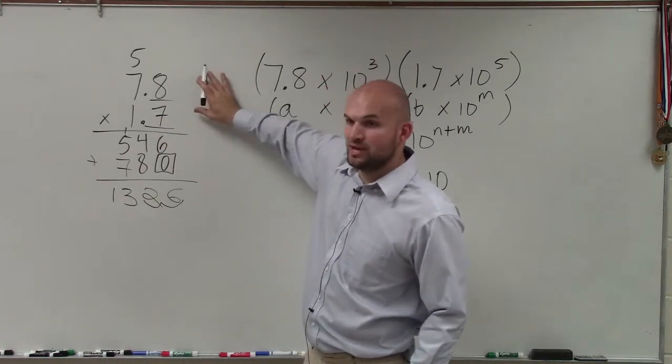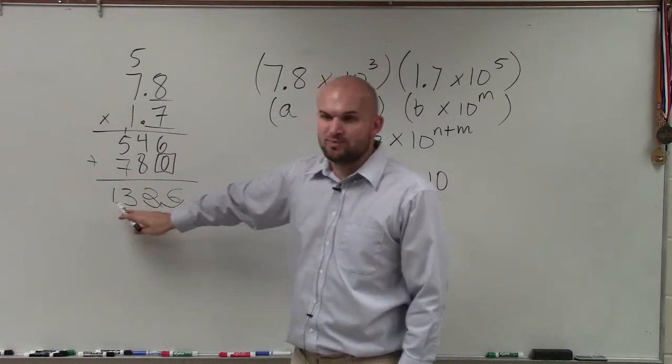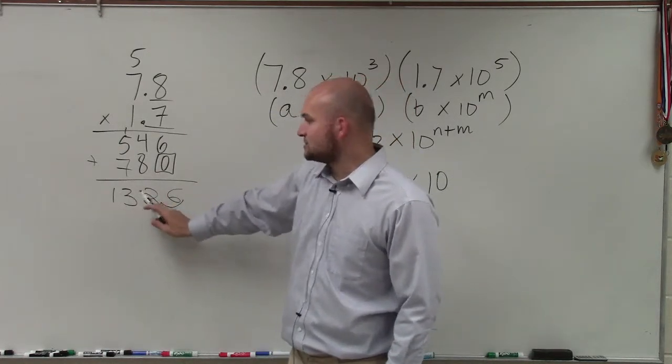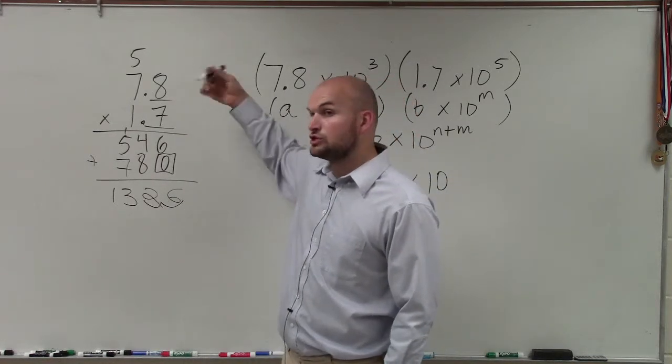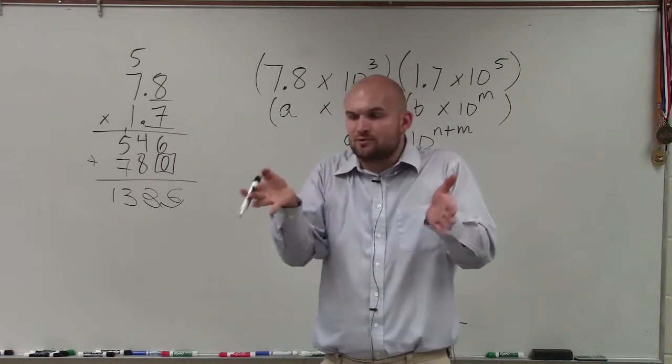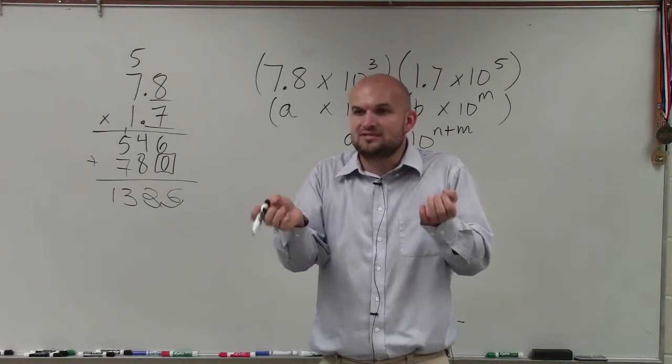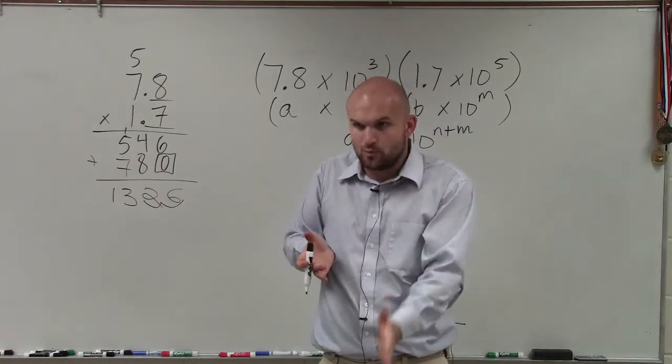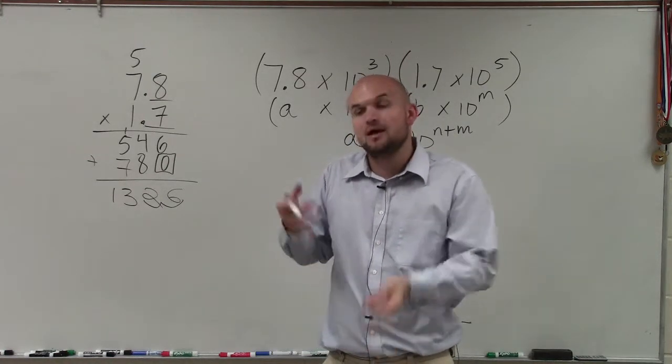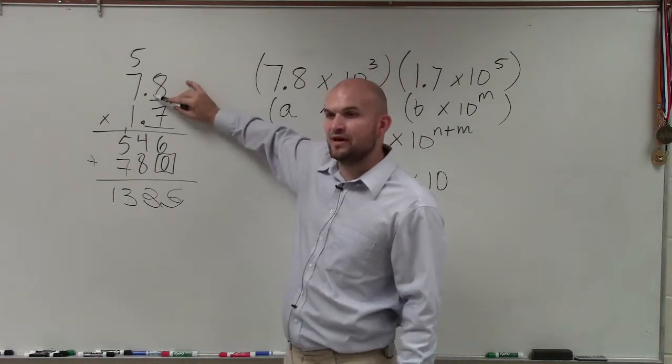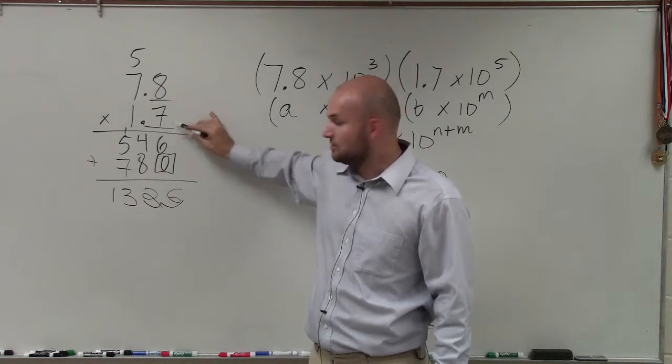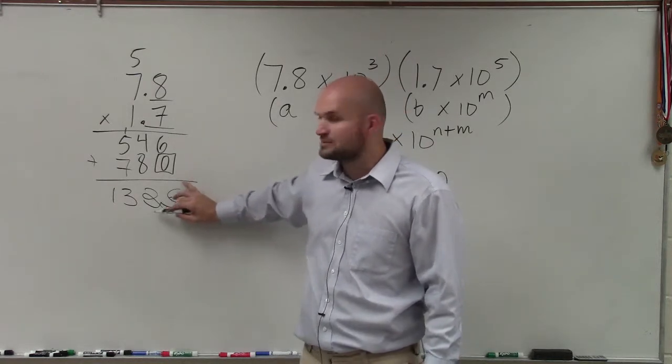Remember, when we're multiplying, when I multiply without any decimal points, I had 1,326. But then what we do to determine—remember, when we're adding and subtracting with decimal points, we just keep the decimal point in a straight line. But when we're doing multiplication, we count how many place values are to the right of our decimal, and then that's where we move our decimal point over.